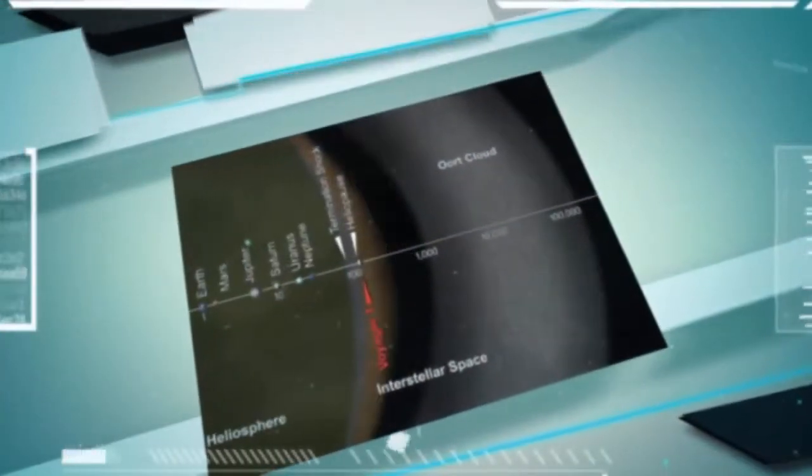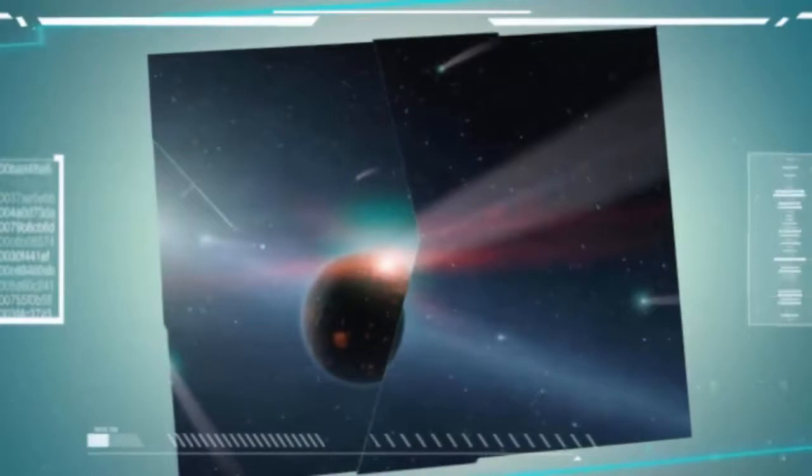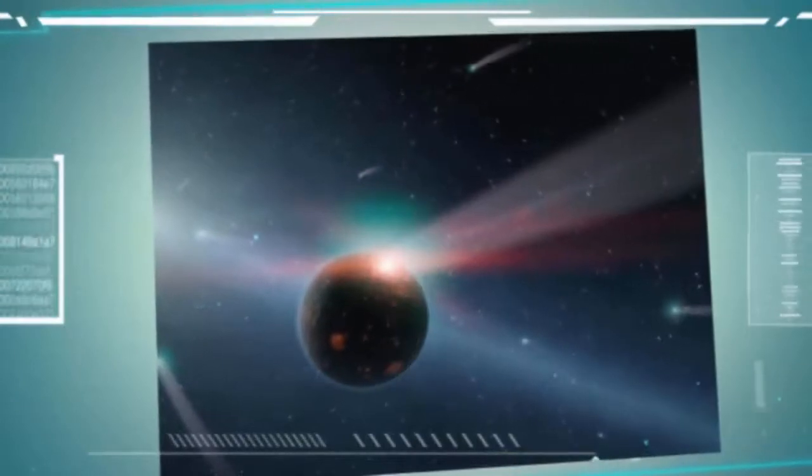Some researchers think that a similar close pass by a star around 65 million years ago is responsible for the meteor shower that wiped out the dinosaurs. However, that could be minor compared to the Gliese 710 event.